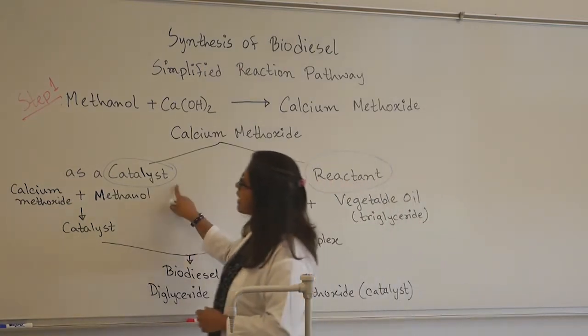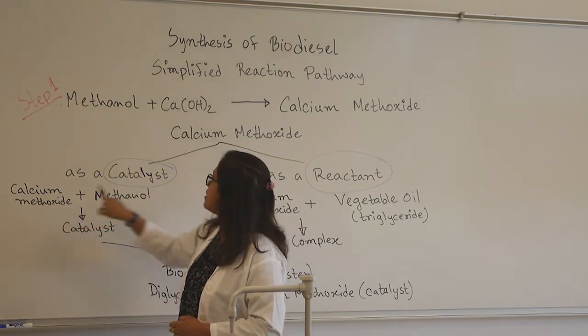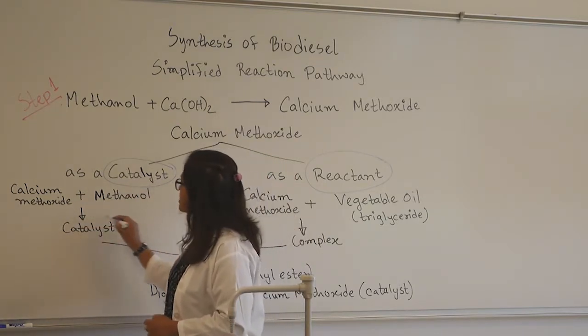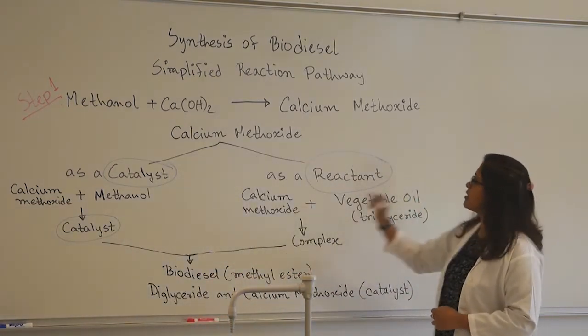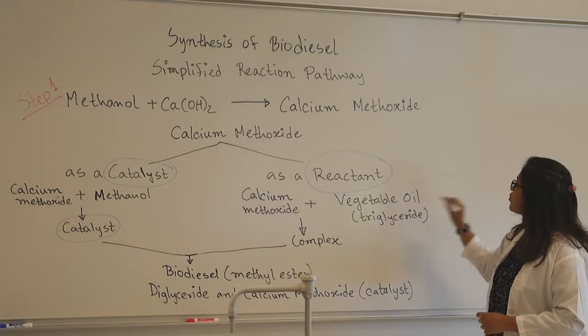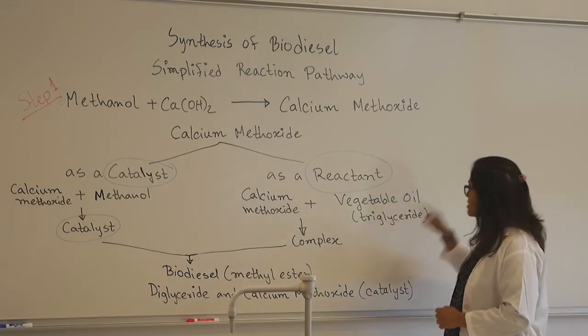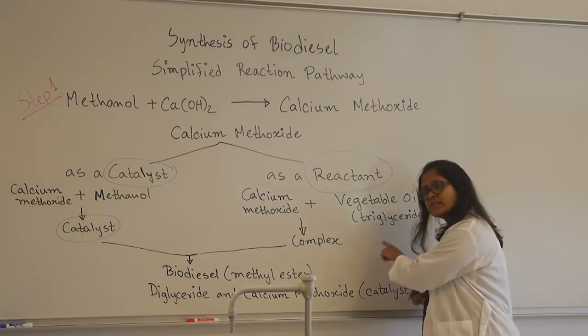So as a catalyst, calcium methoxide reacts with methanol, produces the catalyst, another catalyst. And as a reactant, calcium methoxide reacts with the vegetable oil, which is essentially a triglyceride.